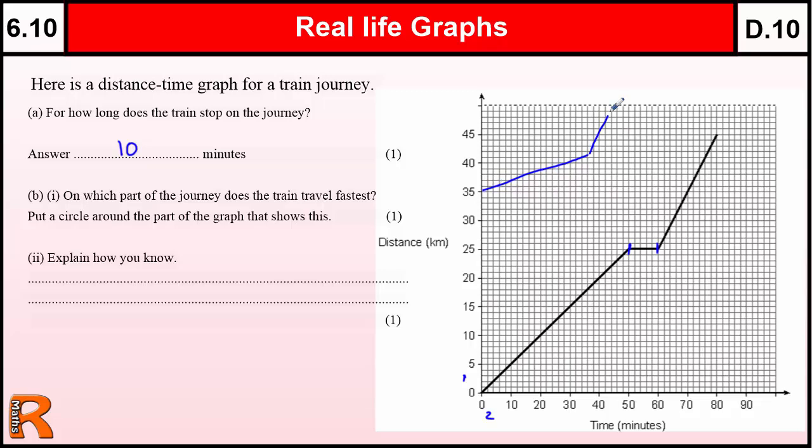If we're looking at a steep line, that means that as time goes on we're actually going much further, much more quickly. So that's a fast section. So this is slow and this is fast. So which part of the journey does the train travel fastest? So it's this part here, because that's where the line is steepest.